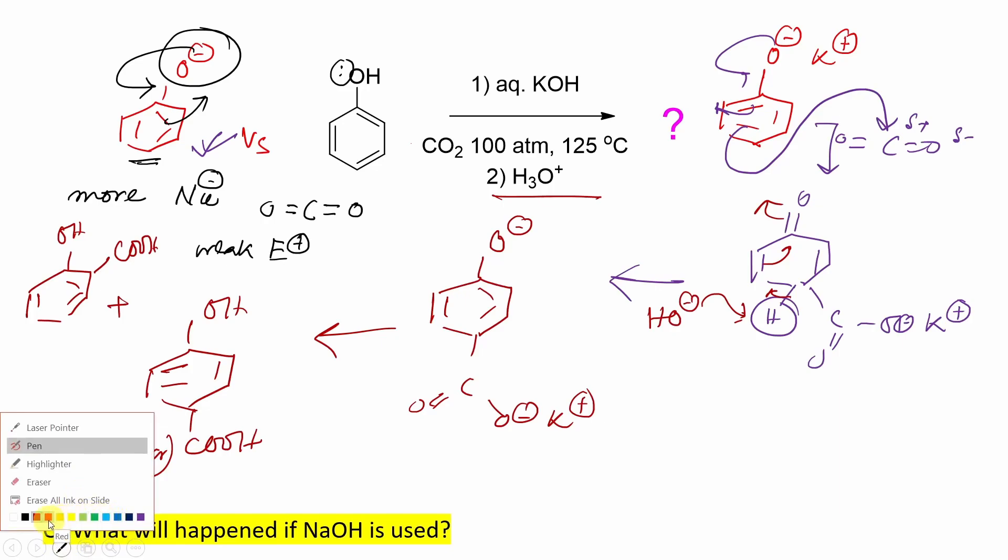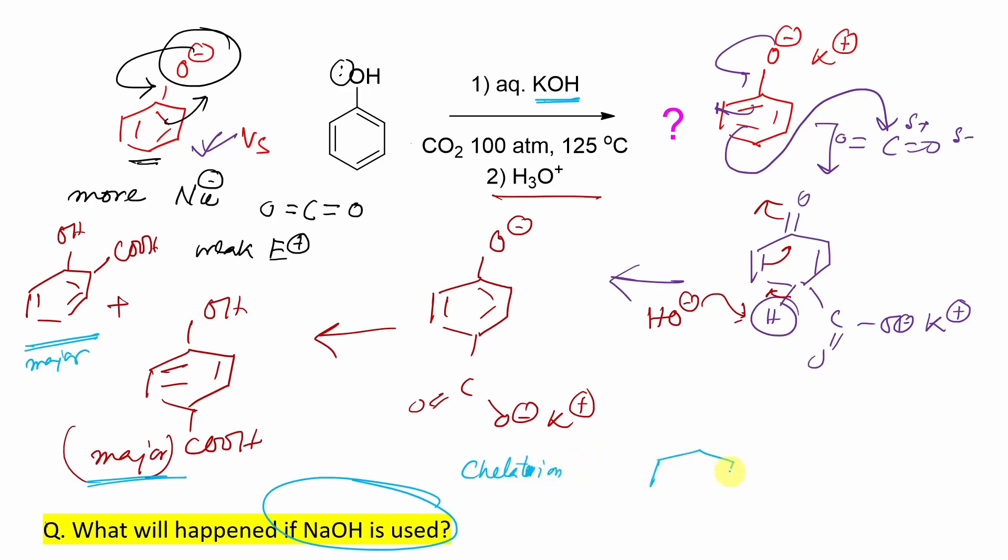But if you say then you can say, sir, I have seen something else. If you use NaOH, the product is different. Yes, if you use NaOH, then here the major product is ortho. For sodium hydroxide, ortho is the major. For KOH, para is the major. Now the question is why this discrimination? There is a story of chelation. Chelation means when sodium phenoxide is produced, this sodium O minus, because of the smaller size, if you look at K plus versus Na plus, Na plus is smaller. So sodium is smaller, so it can come here and remain in the chelated state.